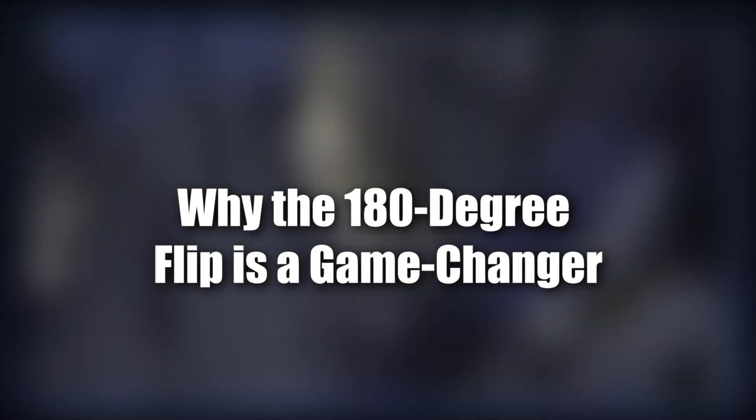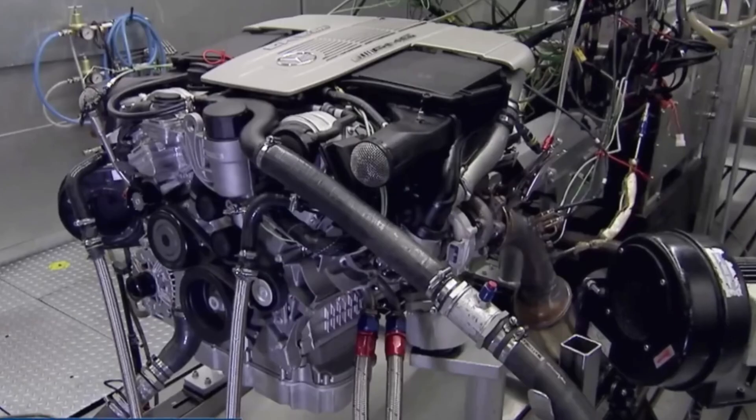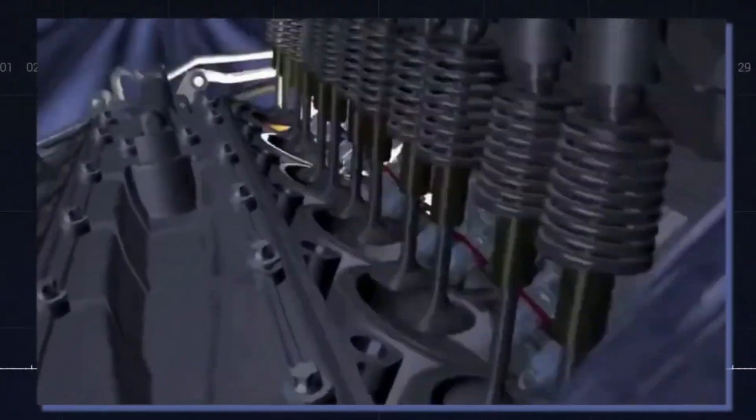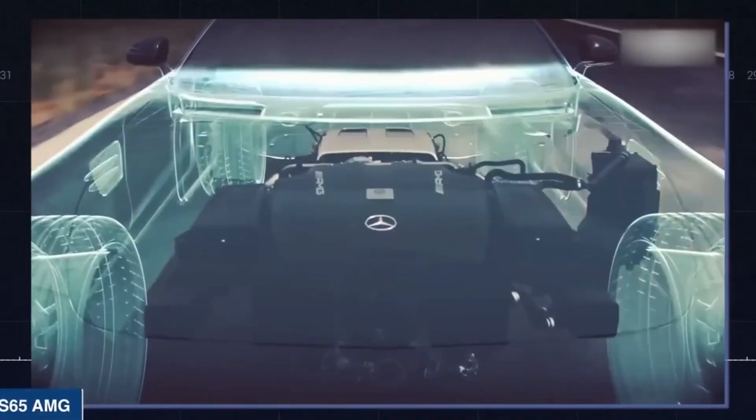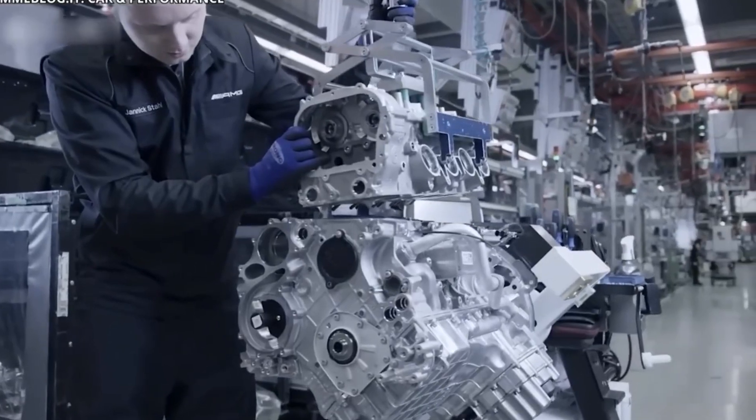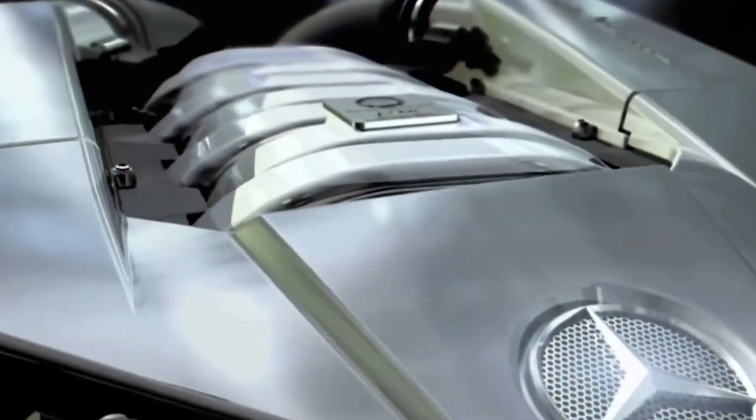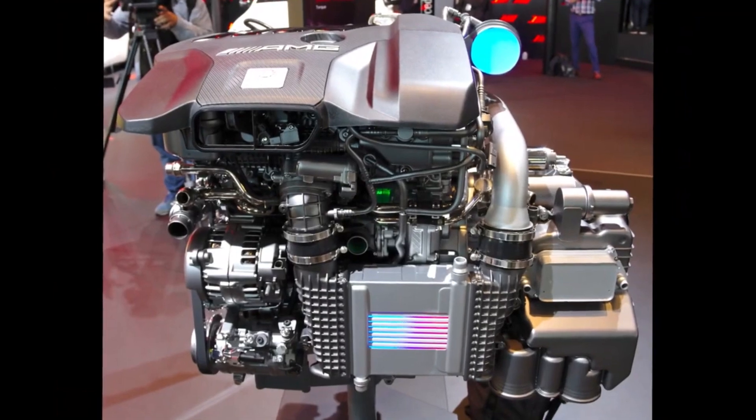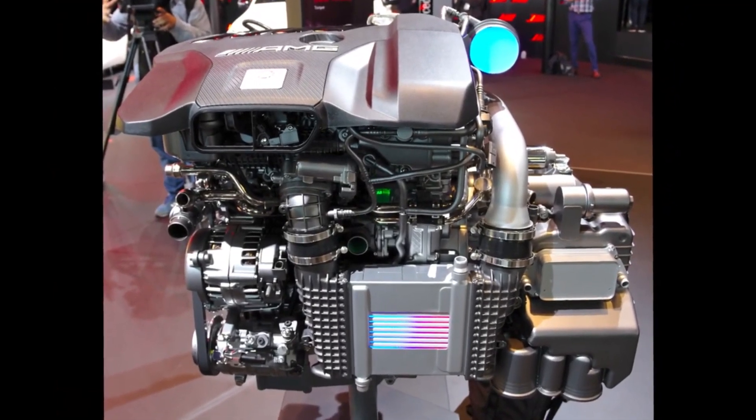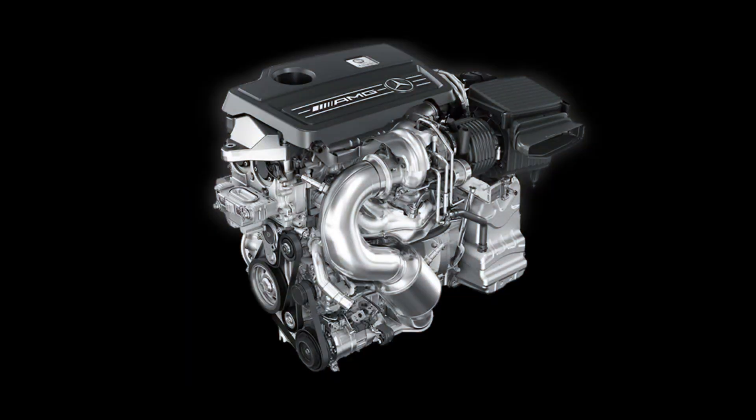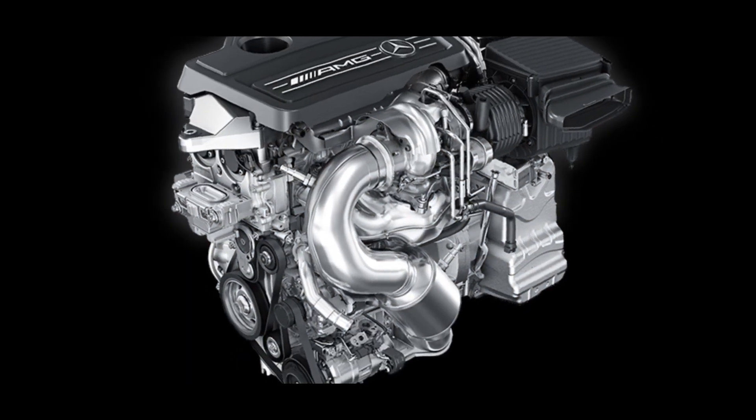Mercedes took an unconventional route by rotating the M139 engine 180 degrees. This design change isn't just for show, it's a masterstroke of engineering. The repositioning shortens air intake and exhaust paths, leading to better responsiveness and performance. Separating cool intake air from hot exhaust areas improves thermal efficiency. This seemingly simple change translates to faster acceleration, smoother handling, and a flatter front section that enhances aerodynamics, proving that bold decisions lead to groundbreaking results.